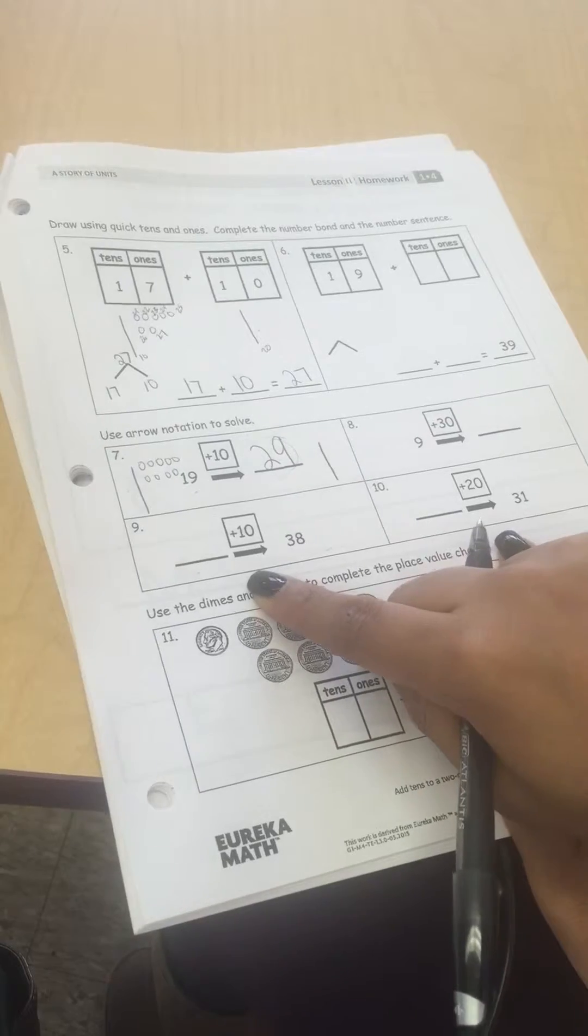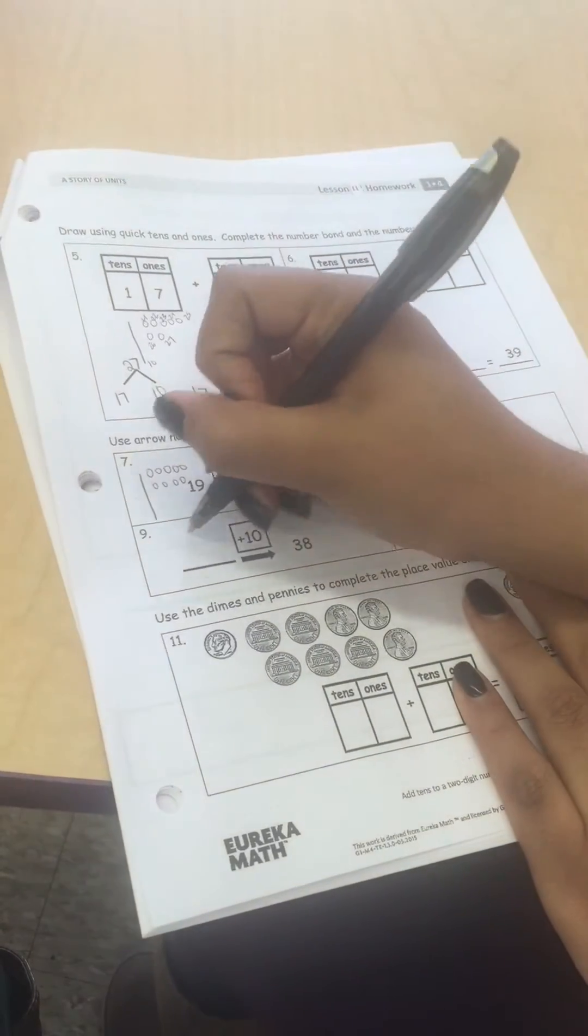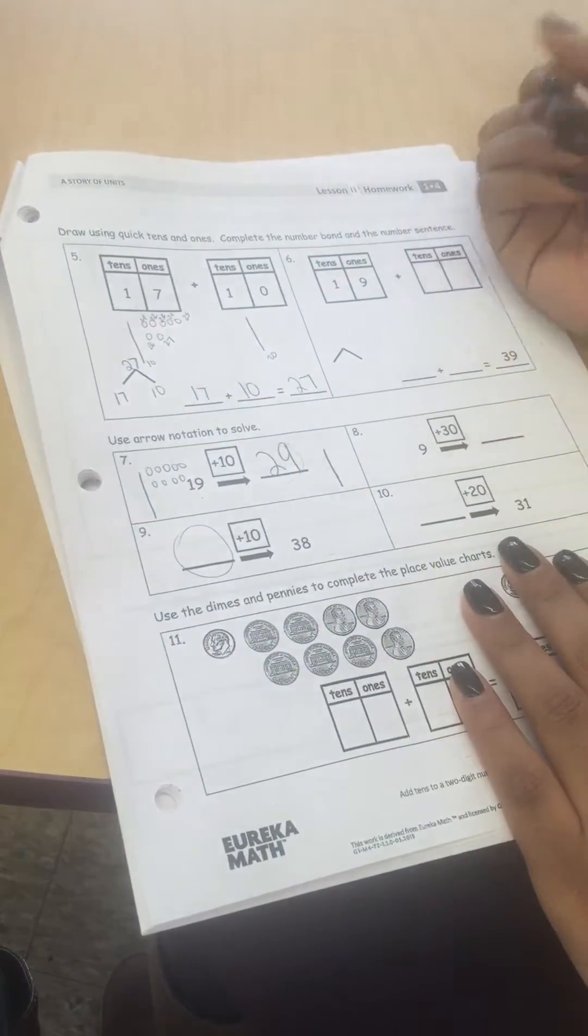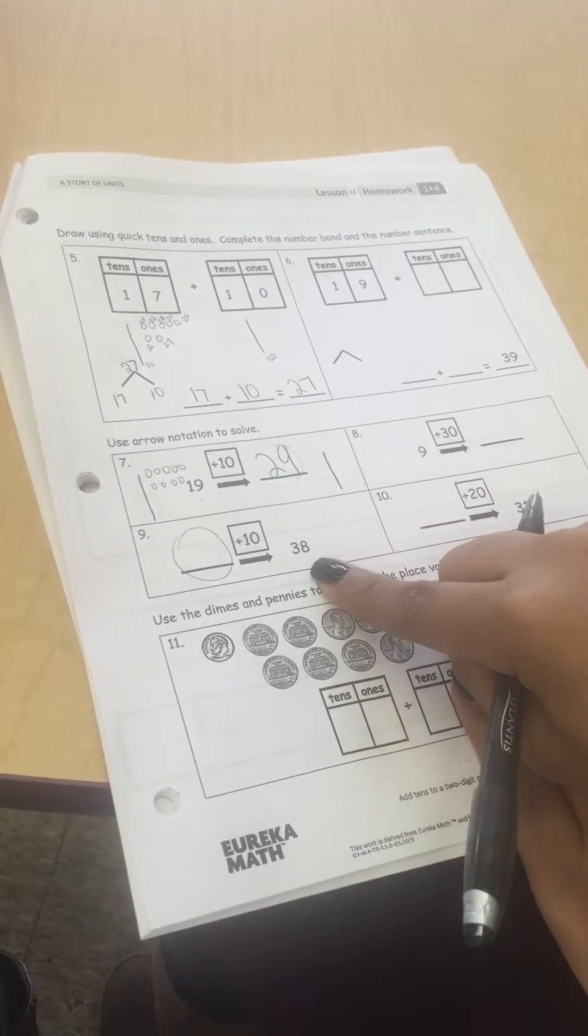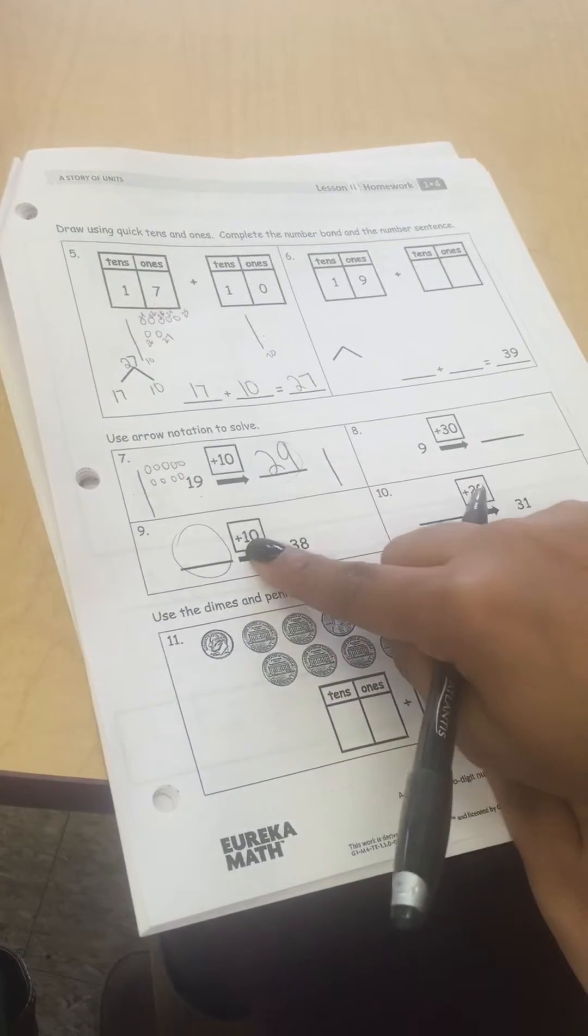Now for this part, it's the same type of problem, but this time we're solving for the first part. What I recommend is drawing your total first and then circling the part that you know.